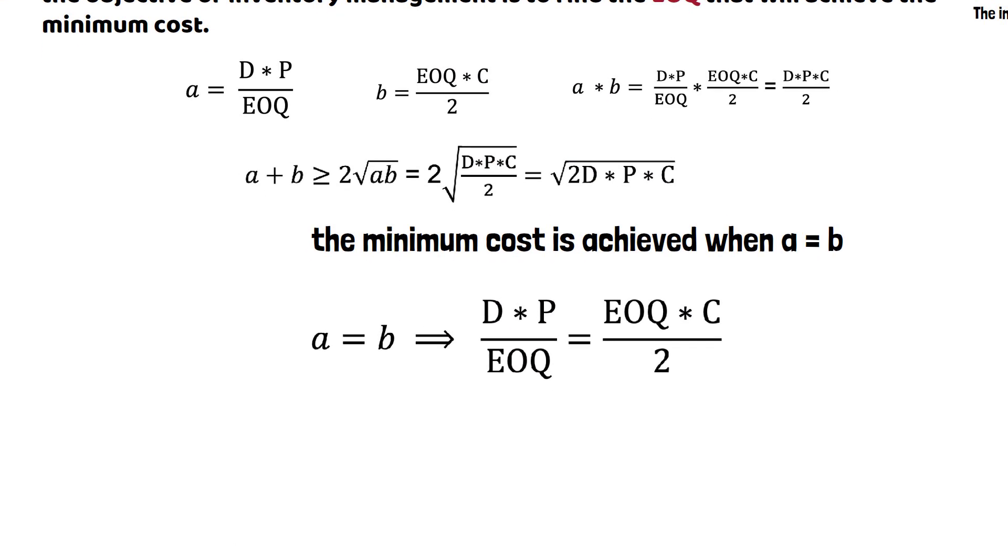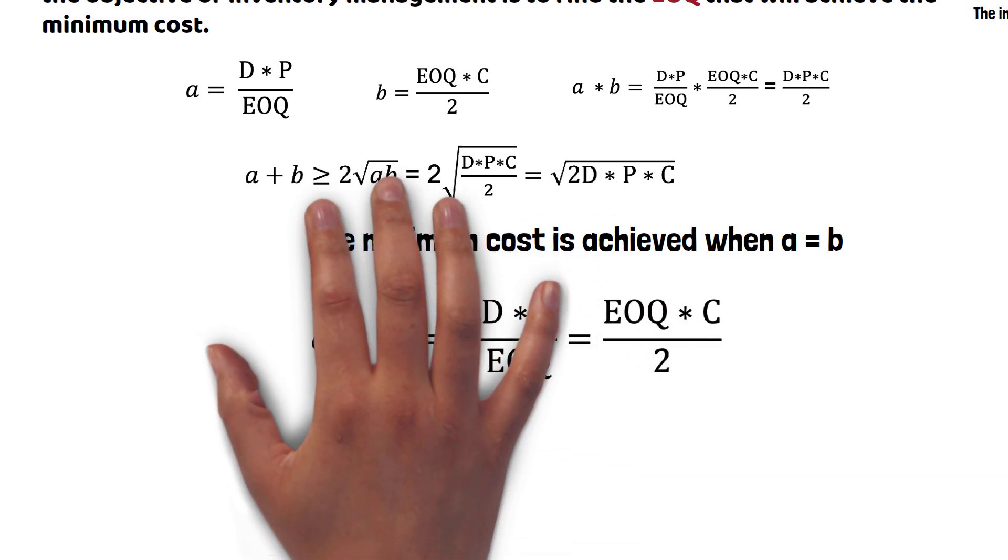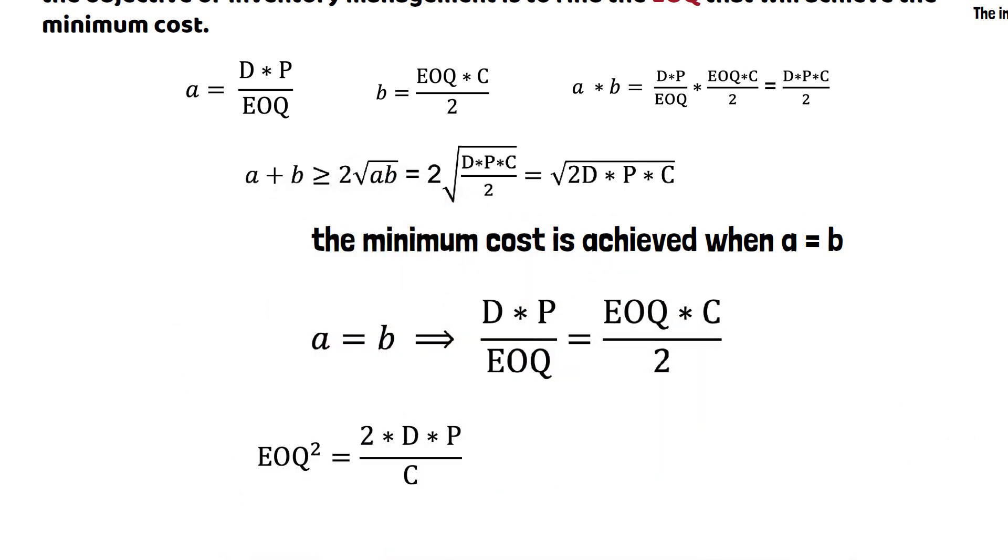So when a equals b, I set up that equation. When I solve the equation, EOQ squared equals 2DP divided by C.